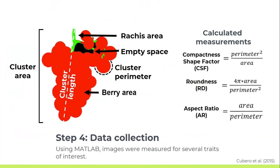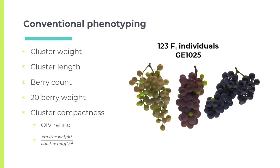I wrote a MATLAB script to measure several traits of interest: whole cluster area, cluster length, perimeter, and percentages of berry pixels, stem/rachis pixels, and empty space. Several calculated measurements were also extracted: compactness shape factor, roundness, and aspect ratio. I also did conventional phenotyping — cluster weight, length, berry count, 20-berry weights — and assigned cluster compactness a score on the standard 1–9 OIV scale as well as the ratio of cluster weight over cluster length squared.